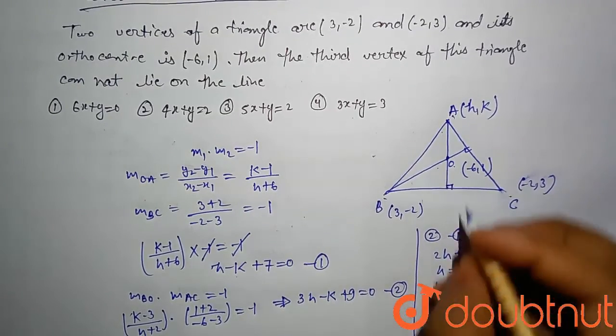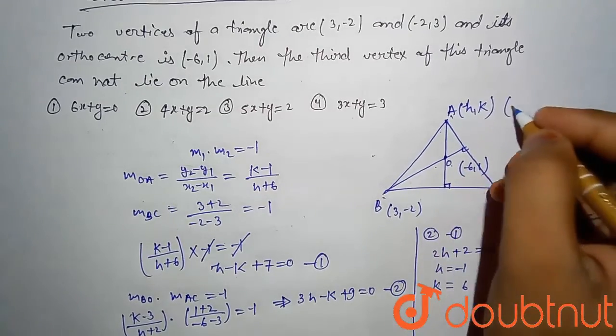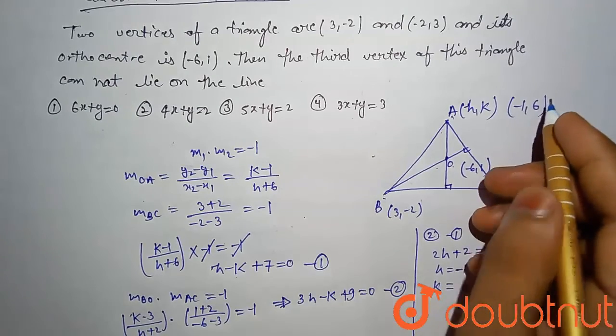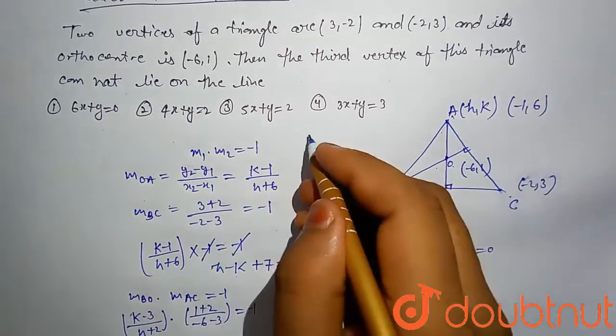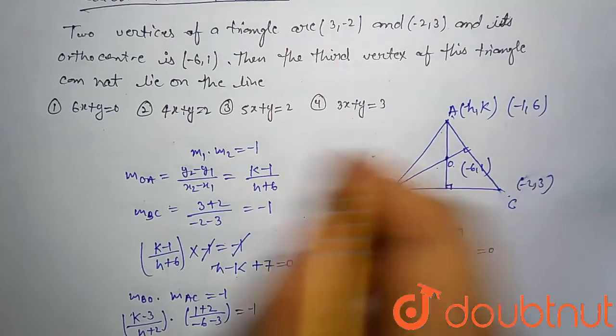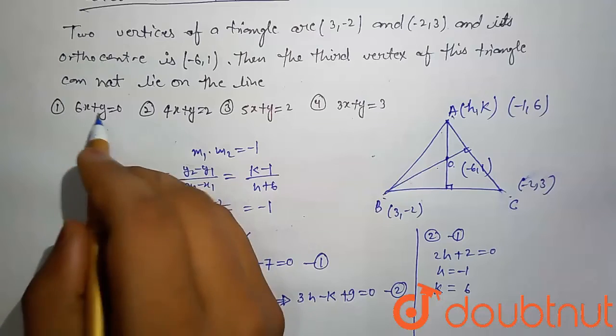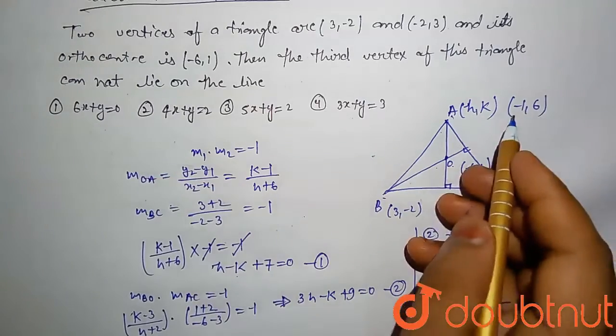Hence A coordinate is (-1, 6). We have to check this point is not satisfied in which equation. Let's check in first option: -1 - 6 + 6 = 0, this is satisfied.